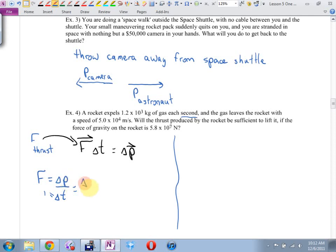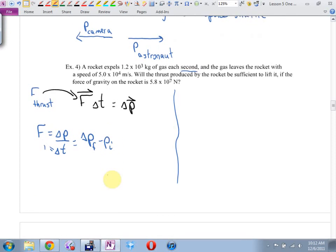And what's change in anything? This is going to be final minus initial. Now, we defined momentum. We said that momentum was equal to mass times velocity. So final momentum is mv final. You know what? I'm going to assume that the gas in the rocket starts out at rest, and then gets thrust outwards. I'm going to assume that the initial momentum of the gas is zero. I think the thrust of the motor is going to be 1.2 times 10 to the third times 5 times 10 to the fourth. This is how much thrust the rocket can put out.